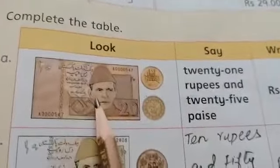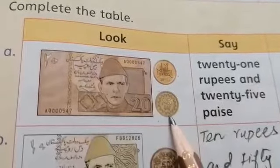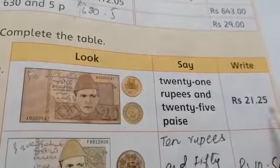So we can write it 21 Rupees and 25 paisa. Rupees 21.25.